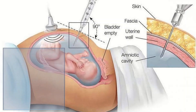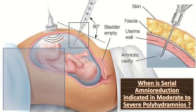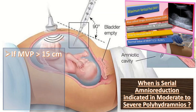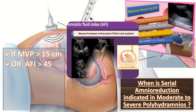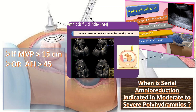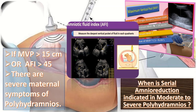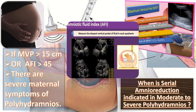Next comes the role of serial amnioreduction. When is serial amnioreduction indicated in moderate to severe polyhydramnios? It is indicated if the maximum vertical pool is more than 15 cm or the amniotic fluid index is more than 45 cm, and also when there are severe maternal symptoms of polyhydramnios such as constipation, dyspepsia, abdominal cramps, etc. You can see that the indications are almost the same as for indomethacin.